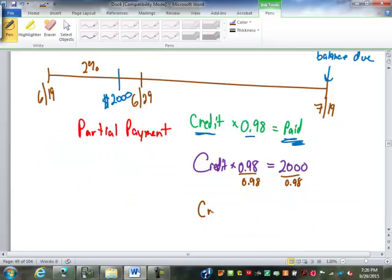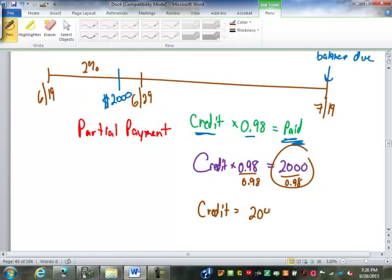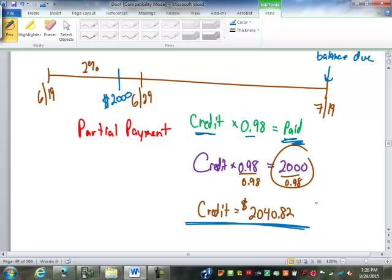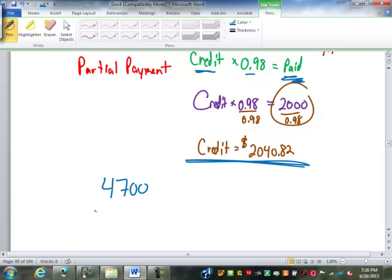So the amount of the credit is the $2,000 divided by 0.98, which is, let me double check just to be sure, it's late at night. $2,040.82, I was a little off. So that is the amount credited. So what's the balance due? Well, $4,700 minus that credit, which is going to be $2,659.18.